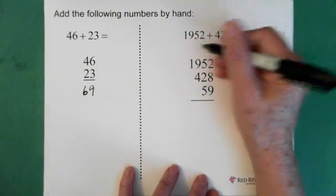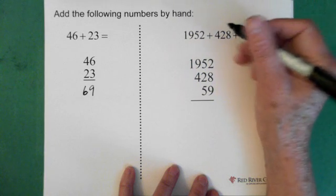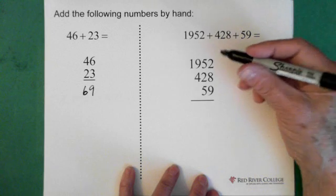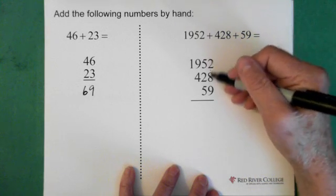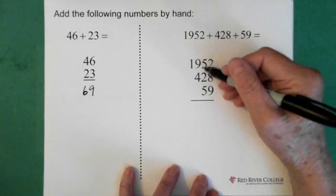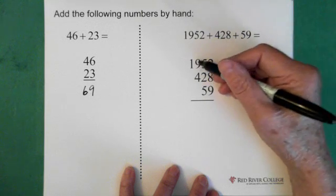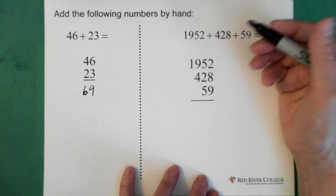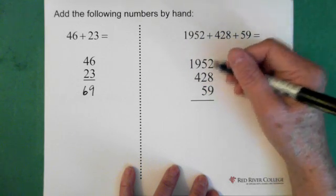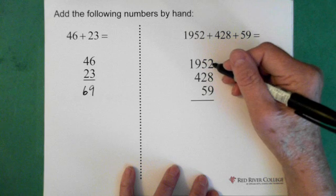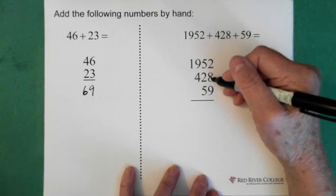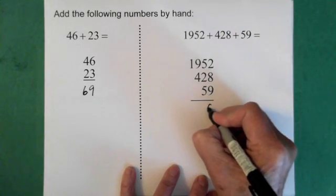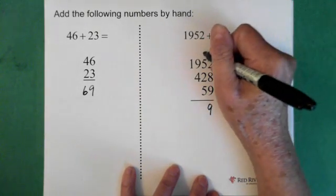Now here we have something just a little bit more challenging. 1952 added to 428 added to 59. Now again, we line it up with the ones in line, the tens in line, the hundreds in line, and then the thousands. So we start adding on this side. So 2 and 8 is 10, plus the 9 is 19. So the 9 goes down here, and the 1 goes up here.